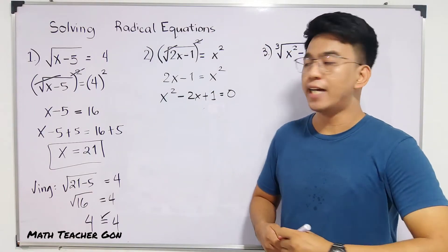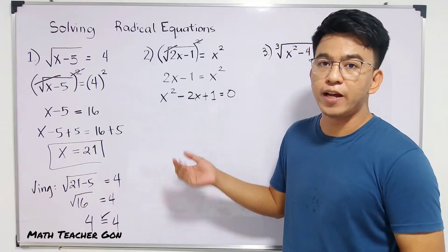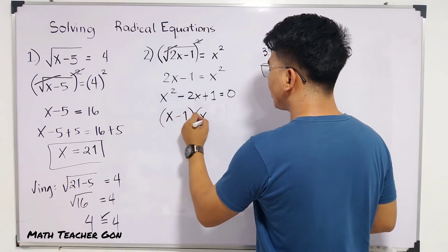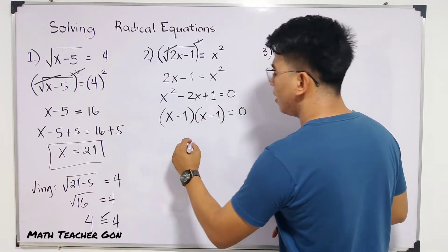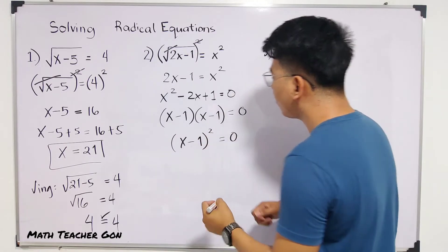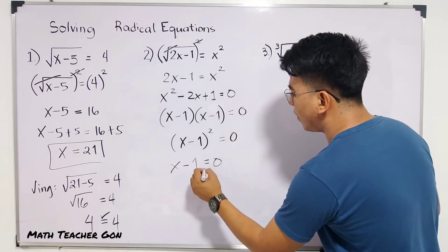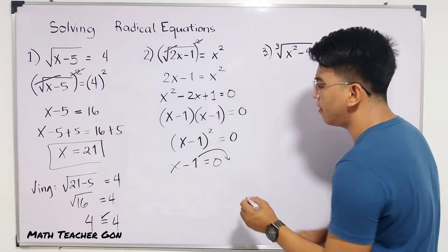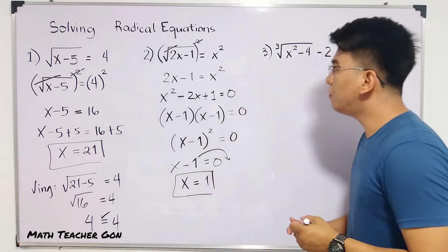Given this quadratic equation, since we have a quadratic, the first thing we do is factor it. Luckily, this one is a perfect square trinomial. The factors are x minus 1 times x minus 1 equals 0, or we can combine them since they are the same: x minus 1 squared equals 0. Simplifying, this gives x minus 1 equals 0. Using the transposition method, we transpose negative 1 to the other side — from negative it becomes positive — so x is equal to 1. This is our answer for this equation.